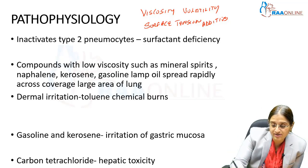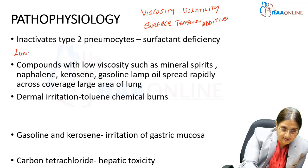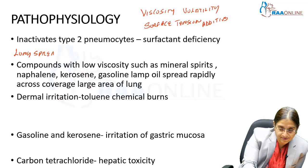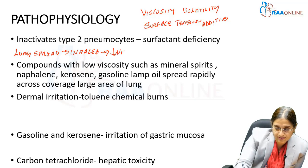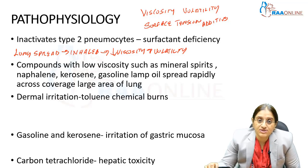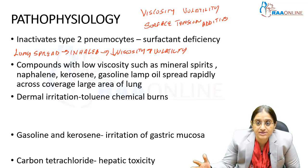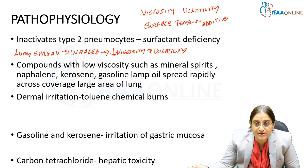When there is lung spread of hydrocarbon, it is mainly because of inhalation due to decreased viscosity and increased volatility. The decreased viscosity causes more spread of the hydrocarbon into the lung. This inactivates the type 2 pneumocytes and causes surfactant deficiency. Compounds with low viscosities include mineral spirits, naphthalene, kerosene, gasoline, and lamp oil — they spread rapidly across the lung area causing surfactant deficiency.